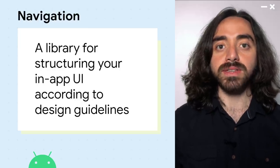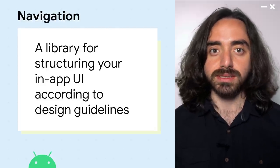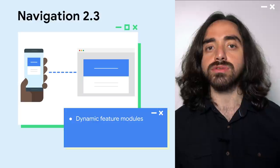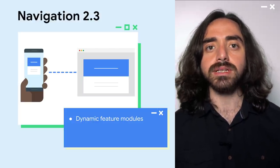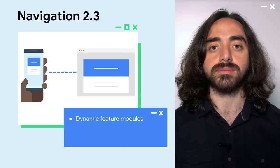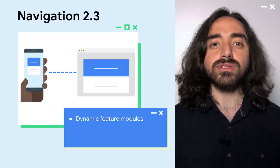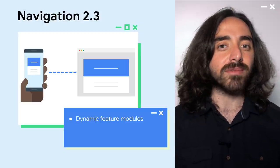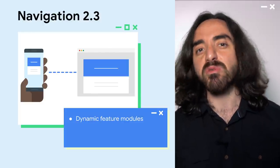The navigation library allows you to navigate between different screens of your application with ease, while following Android UI principles. In Navigation 2.3, we have added support for dynamic feature modules, which allows you to download pieces of your application as the user needs it. This can significantly reduce the initial download size of your application. Thanks to the integration with the navigation component, you can navigate to these modules as if they are part of your base APK — all you need to do is annotate your fragments with the module name, and the navigation library will take care of downloading it if necessary before moving to that screen.